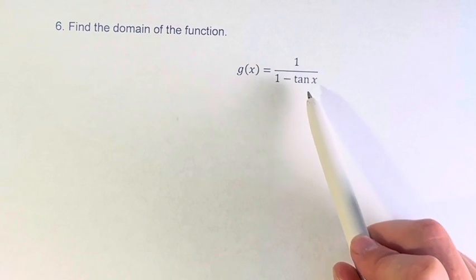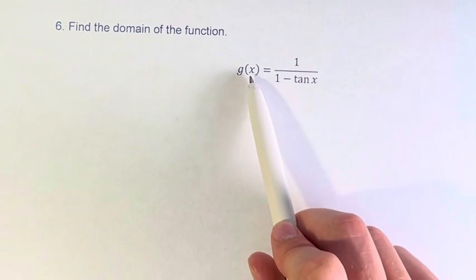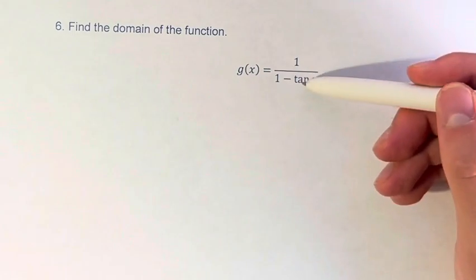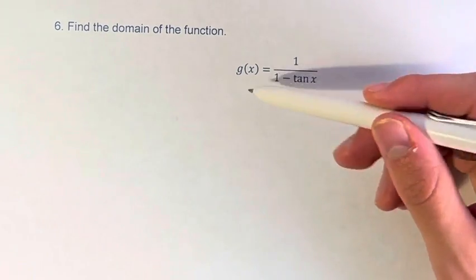So in looking at this function, the only way we can have an invalid input for x is if the denominator is equal to 0. Because tangent of x can take any value, we could plug in any value unless it makes the denominator 0.